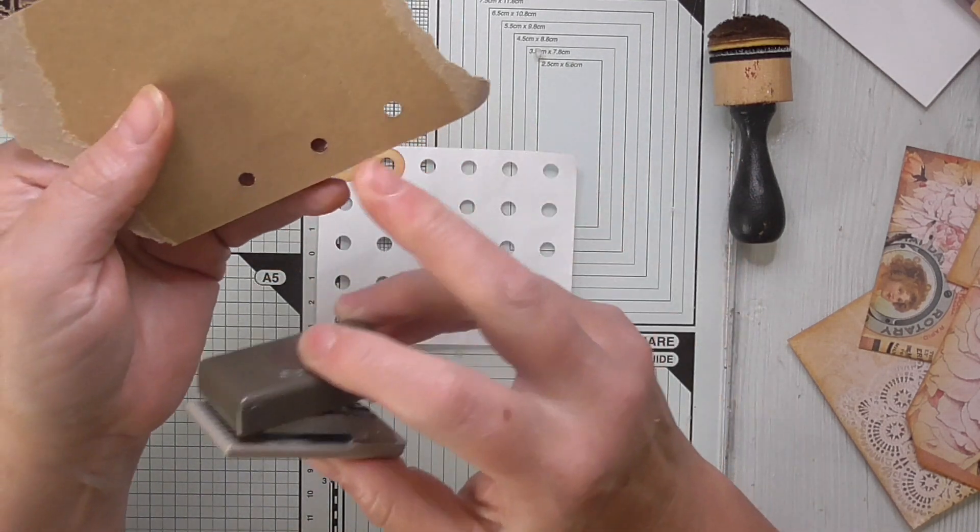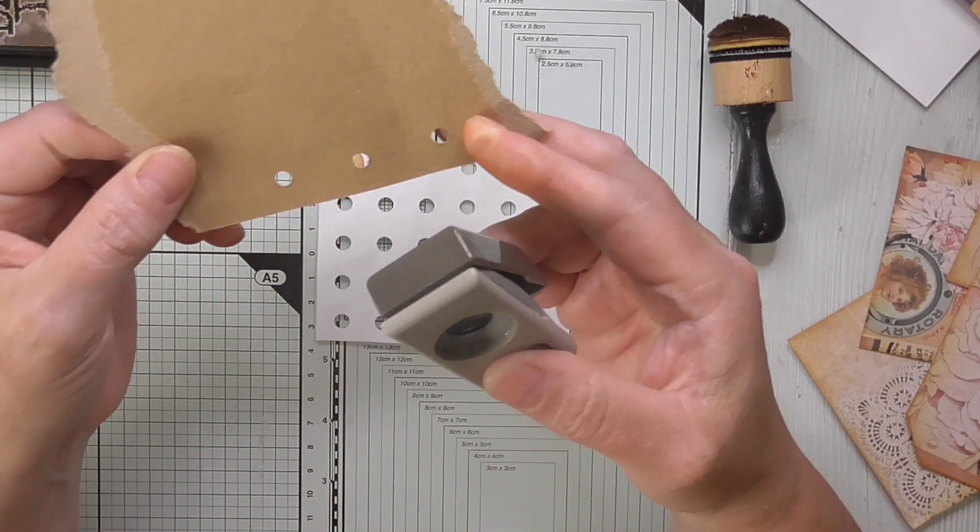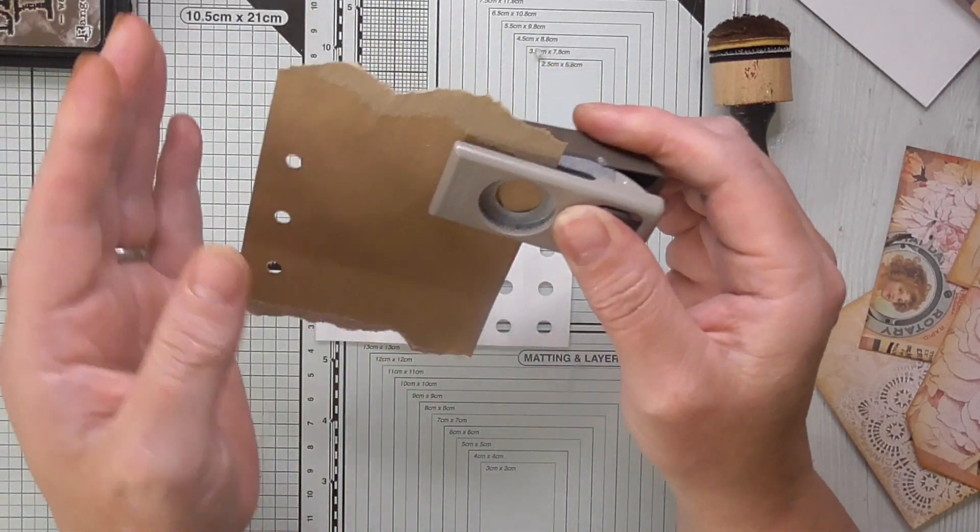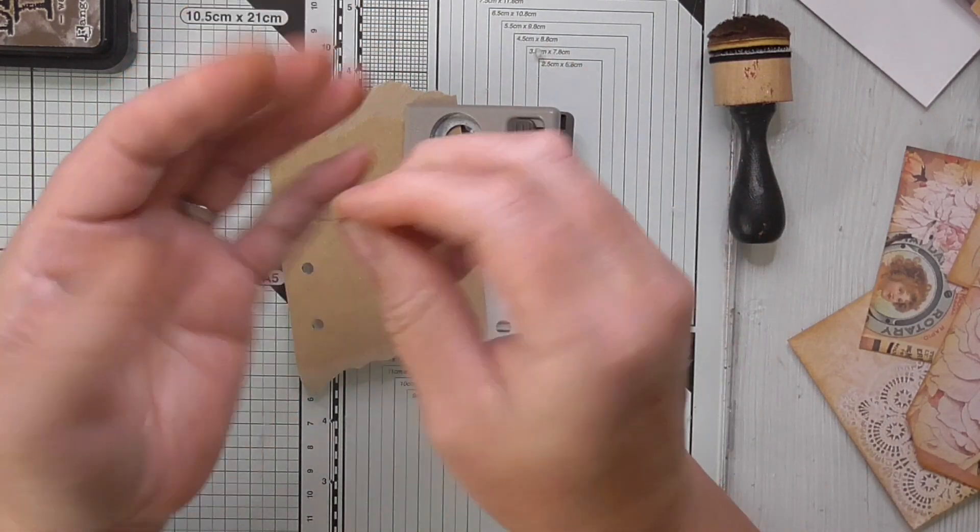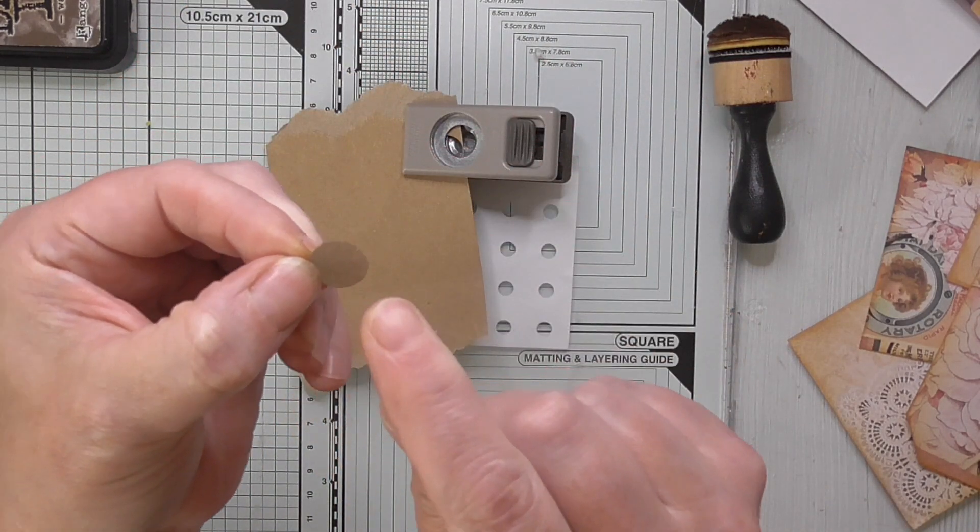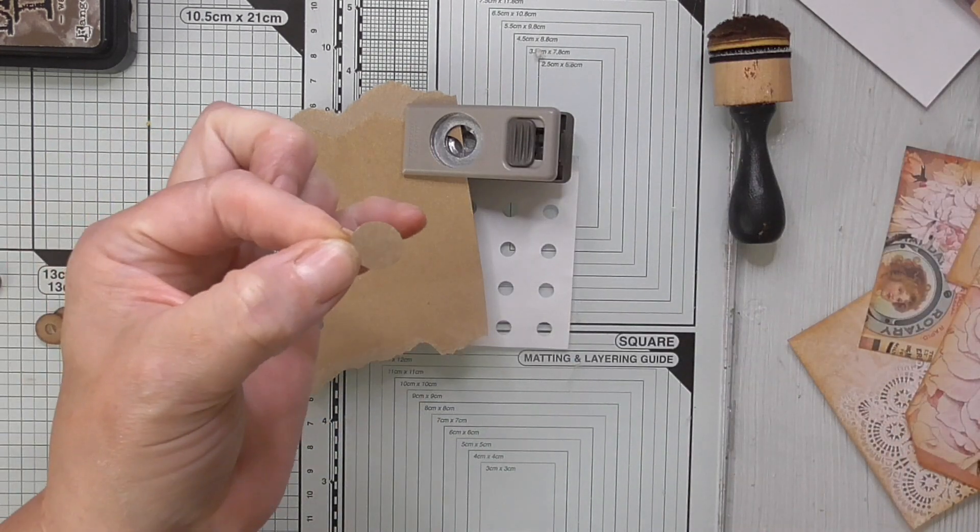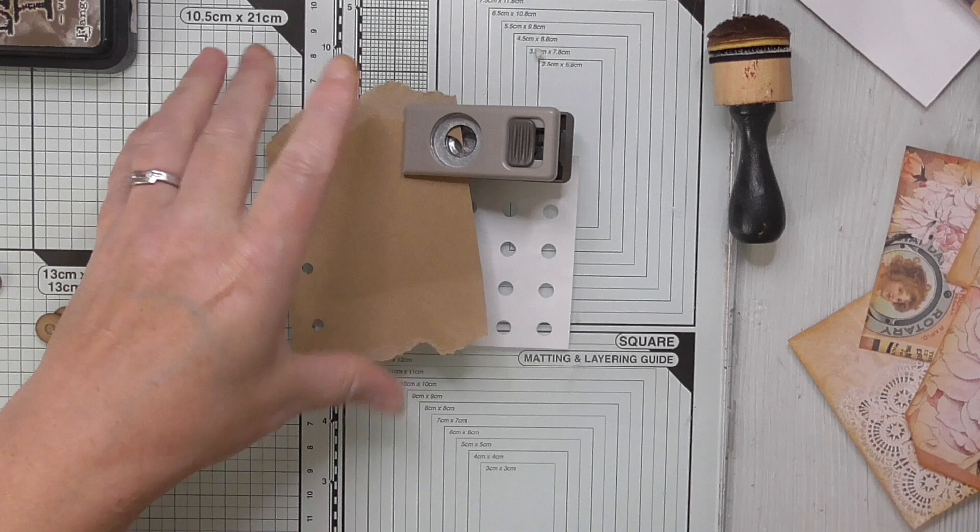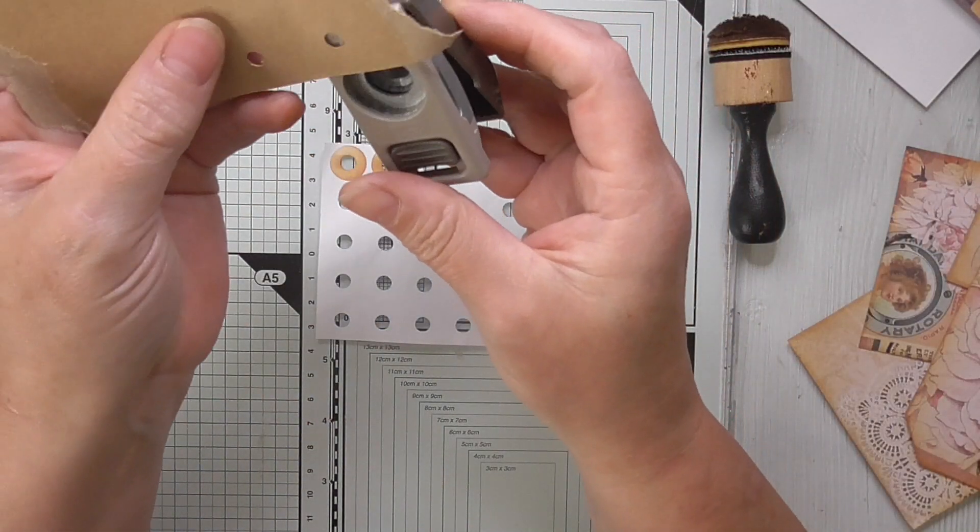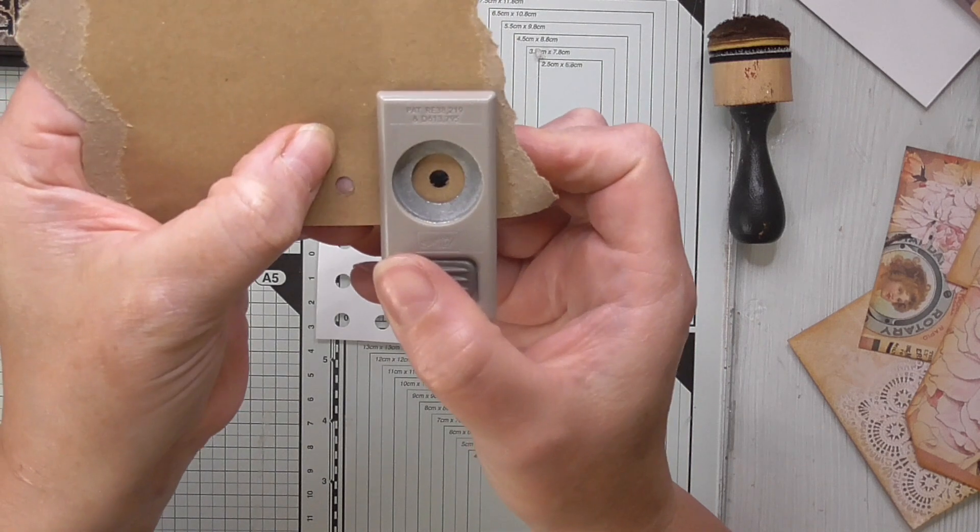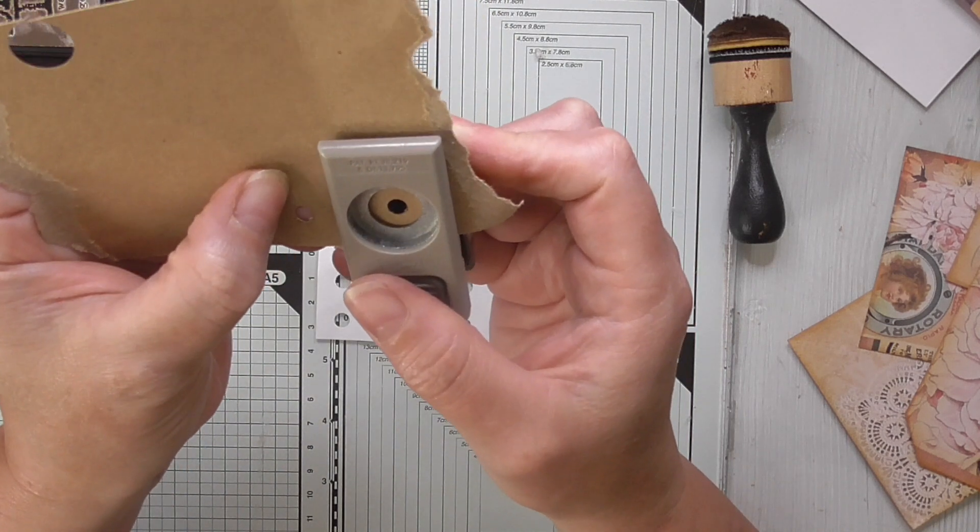And then you punch the larger circle after. So do your smaller circle first - the reason being if you punch a circle first and then try to centralize a hole in the middle of there, you can do it but are you going to get it right? It's easier to centralize it in the middle of your circle punch like so. You're still doing it by eye but you're going to get better accuracy.